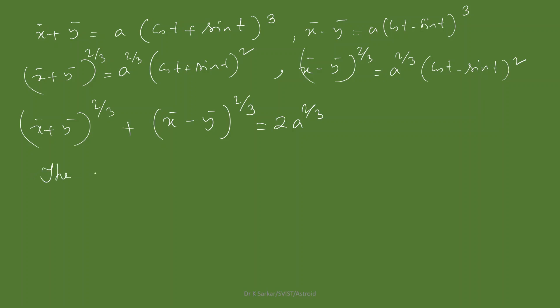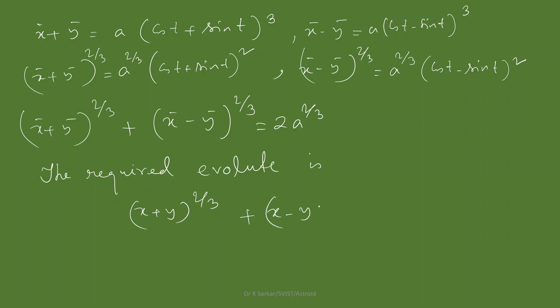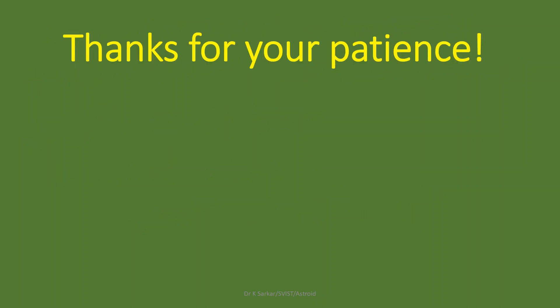Therefore, the required evolute of the astroid is: (x̄ + ȳ)^(2/3) + (x̄ - ȳ)^(2/3) = 2a^(2/3). This is the evolute of the astroid. If you have any questions, please drop them in the comment box.